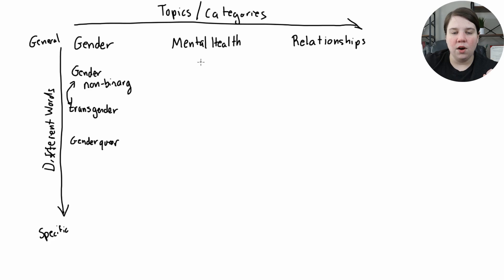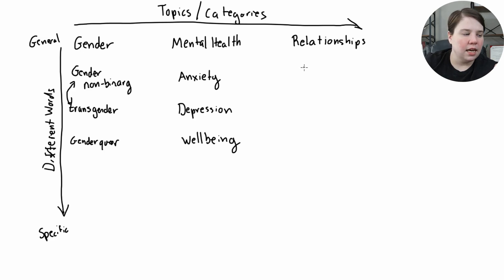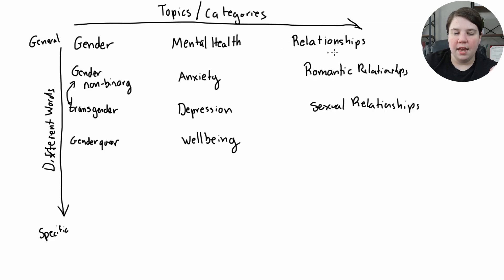For mental health, I want to think about terms like anxiety, depression, and even well-being — that's a common term in this area. And then for relationships, I'd include romantic relationships, sexual relationships, and familial. Now I have a lot of different terms, and instead of just using broad combinations, I can see the full range of options I have.